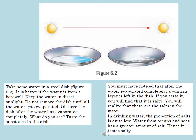Take some water in a steel dish, as shown in Figure 6.2. It is better if the water is from a bore well. Keep the water in direct sunlight. Do not move the dish until all the water gets evaporated. Observe the dish after the water has evaporated completely. What do you see? Taste the substance in the dish. You must have noticed that after the water evaporated completely, a whitish layer is left in the dish.